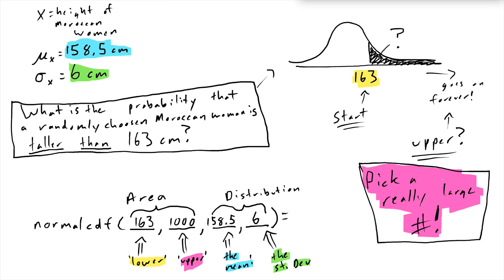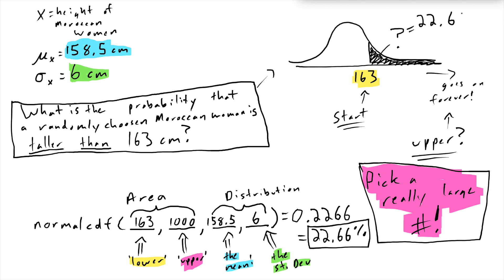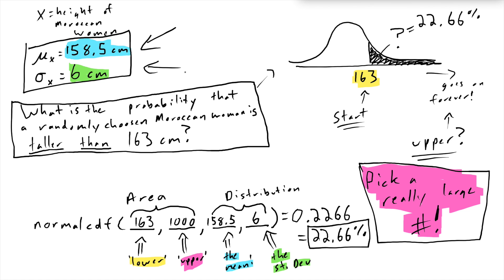When I do this in my calculator, I get 0.2266, which is 22.66% — that's the area to the right of 163 for this particular normal distribution. It's important that we're working with a distribution with this mean and this standard deviation. Anytime we're asking about the height of Moroccan women, we would always use this mean and standard deviation, but if we were asking about a different variable, we would use different values.